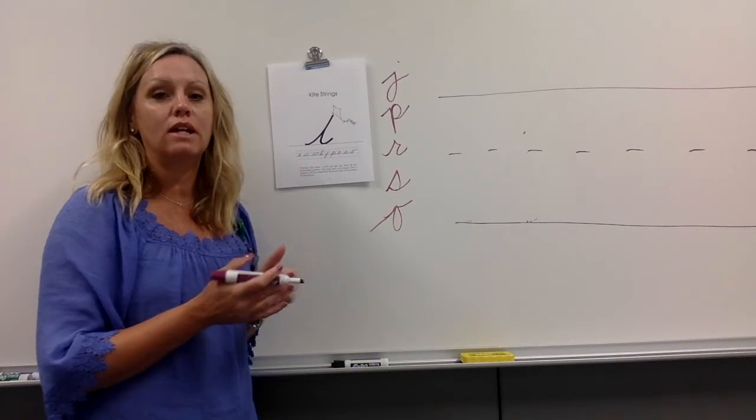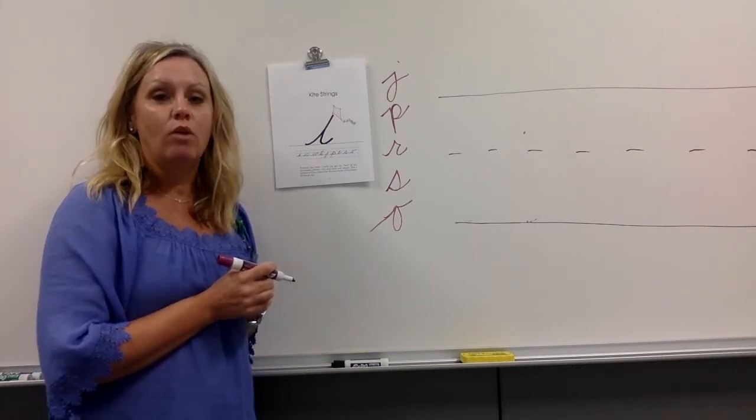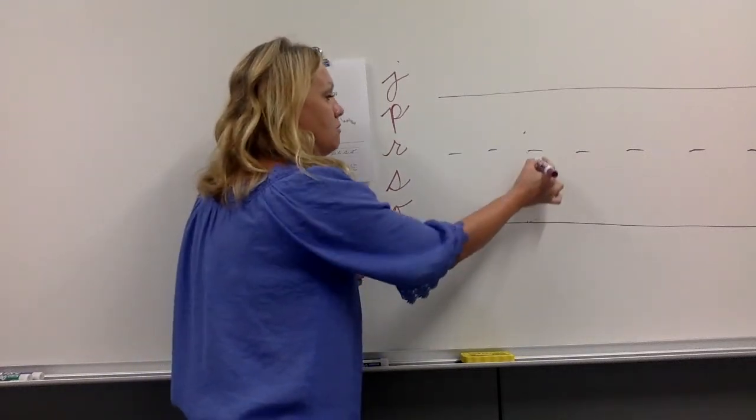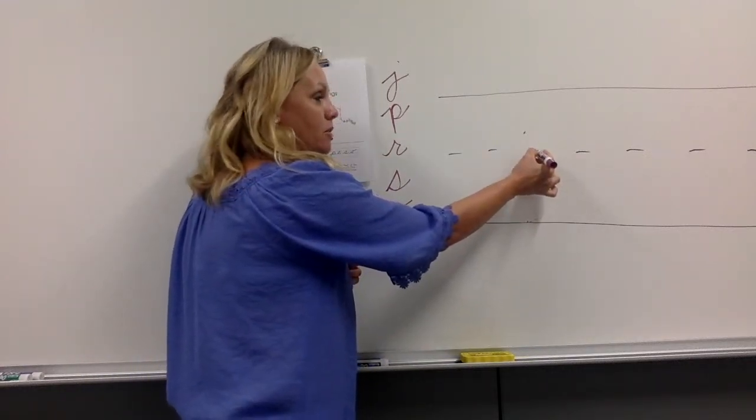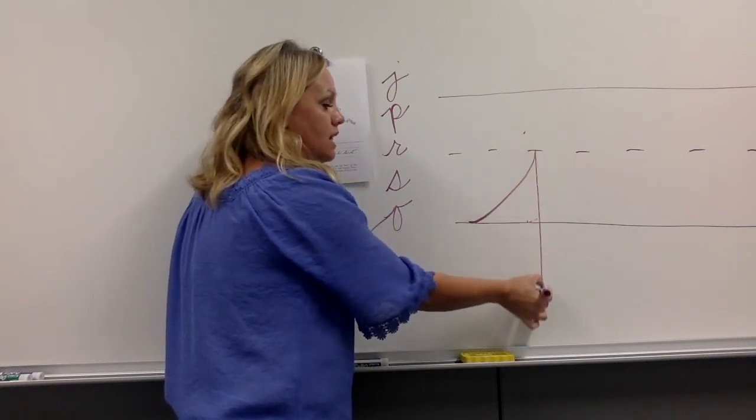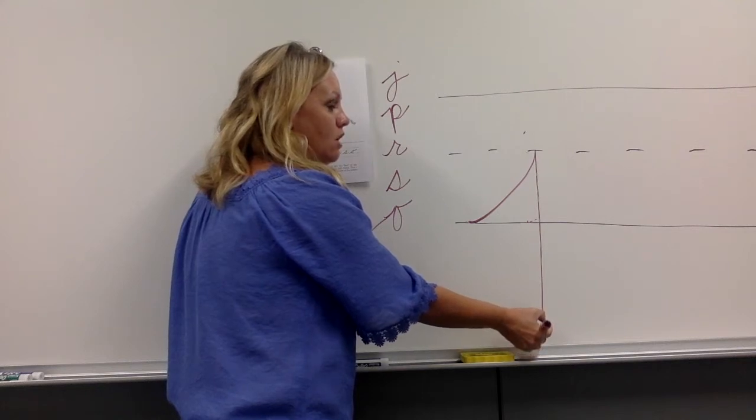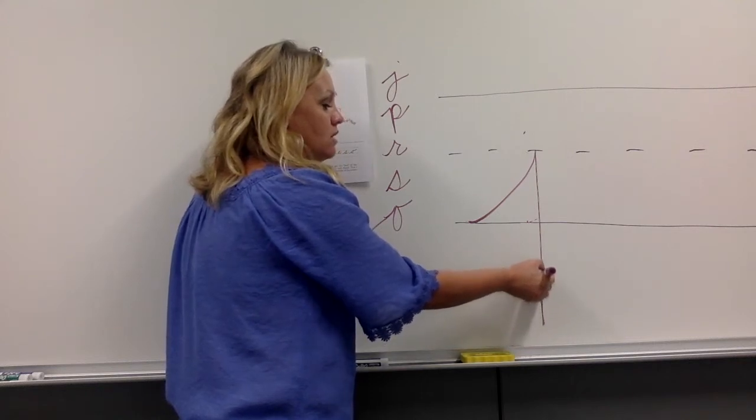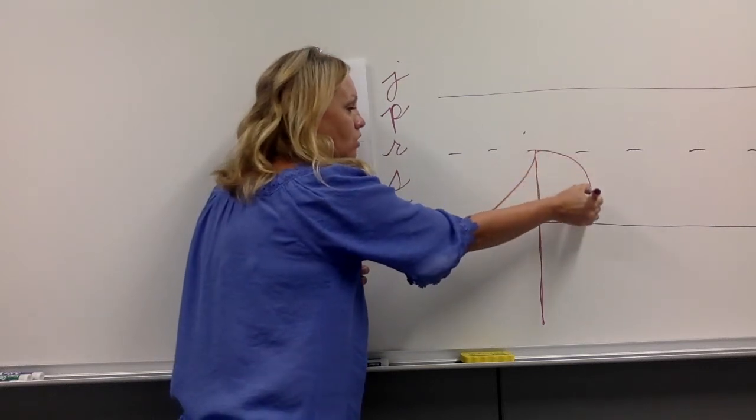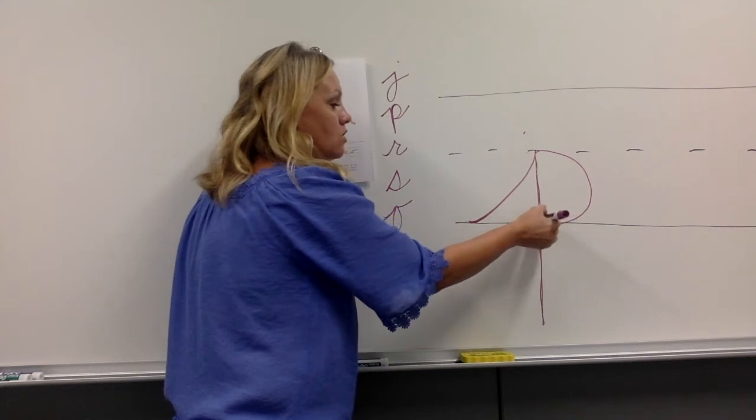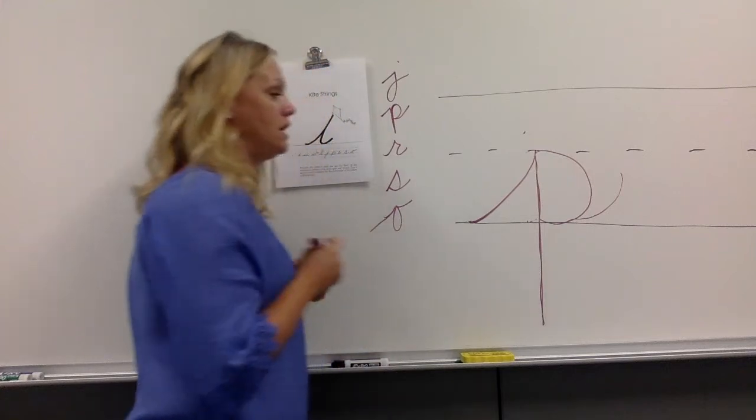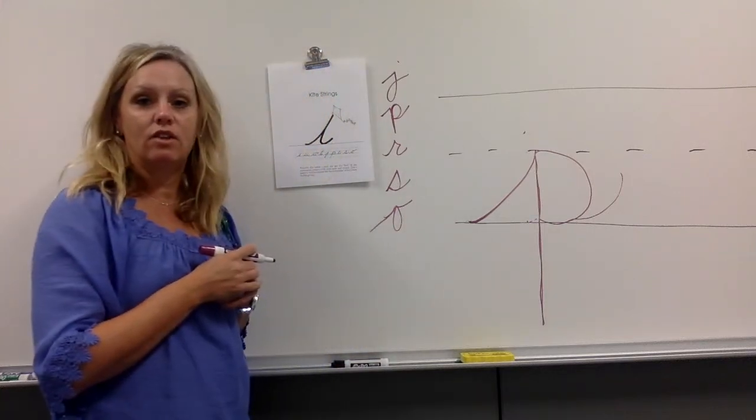Lowercase P. These are all lowercase letters that we're starting. Where do we start? The bottom writing line. Kite string up to the middle divider. Remember a kite string is a slanted diagonal line. Pull straight down below your writing line, retrace on the same line up to the middle divider, circle around, touch the bottom, retrace on this P, and release. There's our lowercase P.